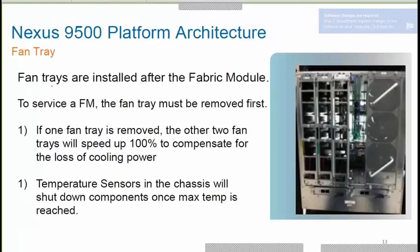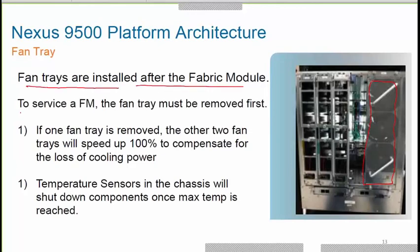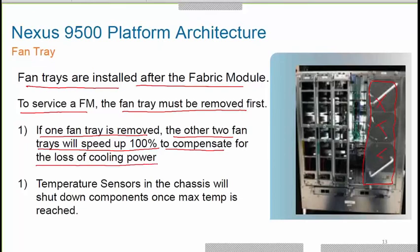The fan trays are installed behind the fabric modules. To service a fabric module, you first remove the fan tray, then remove the fabric module, replace it, and reinsert. If one fan tray is removed, the other two fan trays will speed up to 100 percent to compensate for the loss of cooling. Temperature sensors in the chassis will shut down components once maximum temperature is reached.